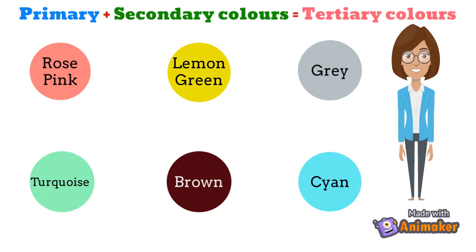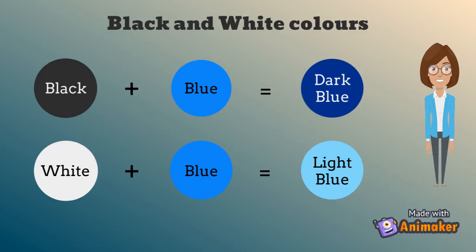Now let us talk about tertiary colors. By mixing primary and secondary colors, different tertiary colors can be formed. Few examples of tertiary colors are rose pink, lemon green, gray, turquoise, brown, and cyan.